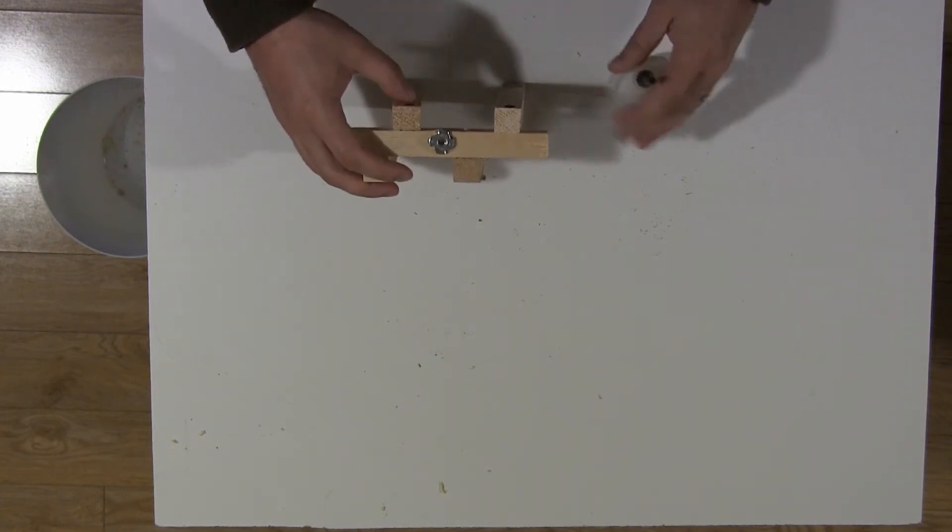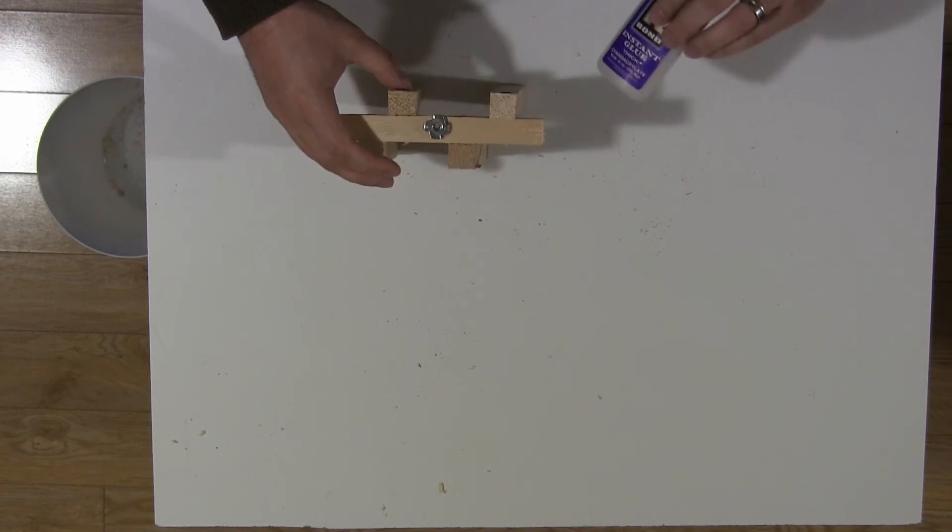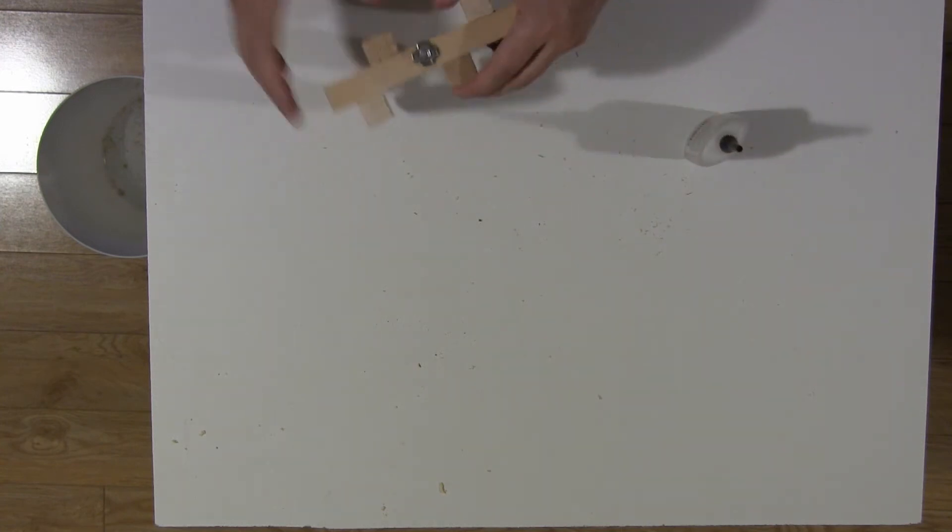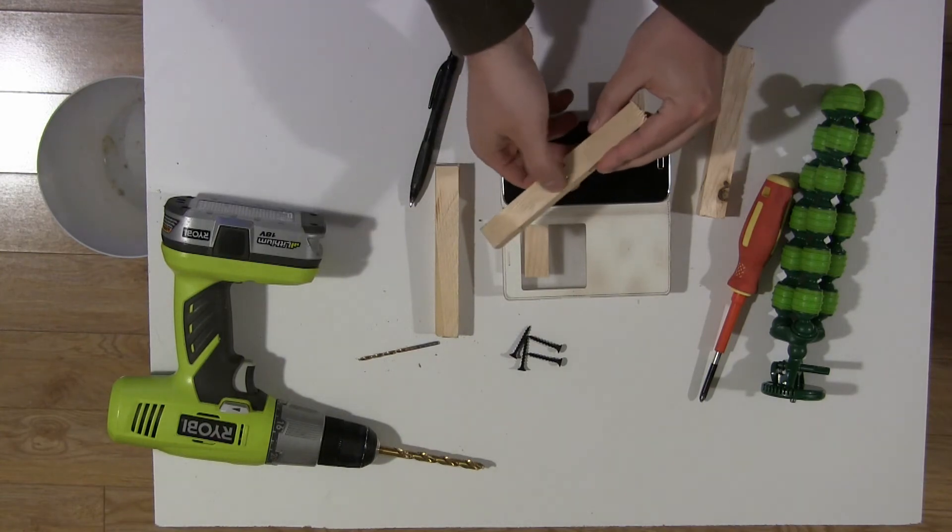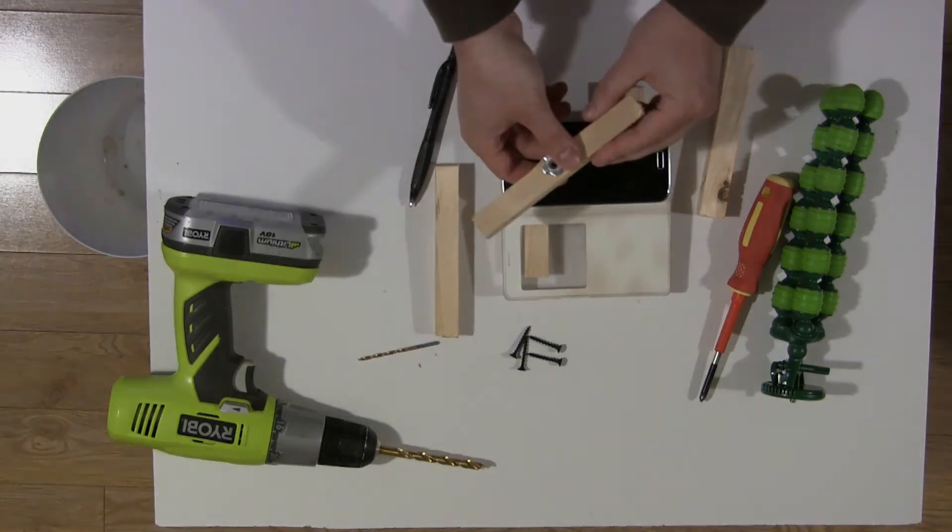I'm using crazy glue. I do recommend getting a nice large two ounce bottle. They're much cheaper than what you would get normally at the hardware store. There you go. Just as I said, the edge raised a little bit, but it's okay because the other three pieces are securely fashioned.